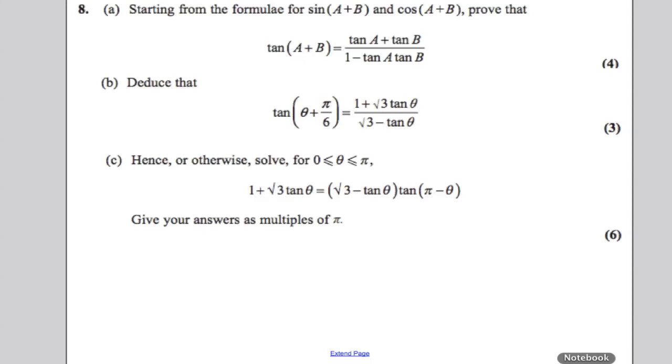This question is about trigonometric identities and solving equations. The first part tells us that starting from the formula for sine A plus B and cosine A plus B, prove the following. So that's straight out of your textbook that you should have learned, and you can use the formula booklet. To deduce the following, this is a simple application of part A.